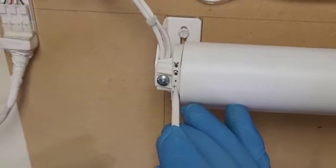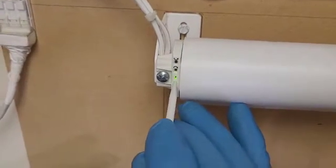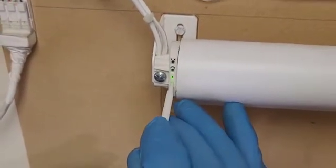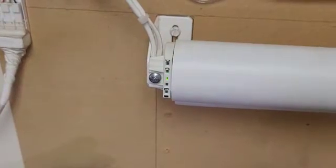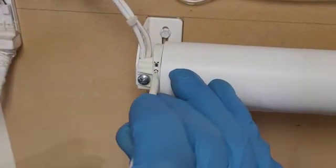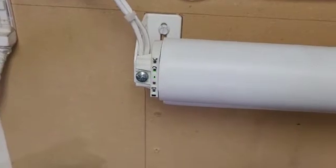All right, so the first thing you're going to do is hold that open window button until the light starts flashing and goes solid. Once that goes solid, you're just going to tap that clockwise button.